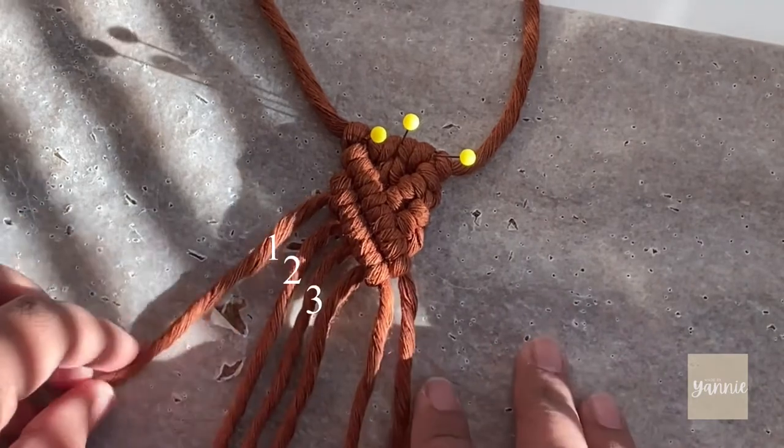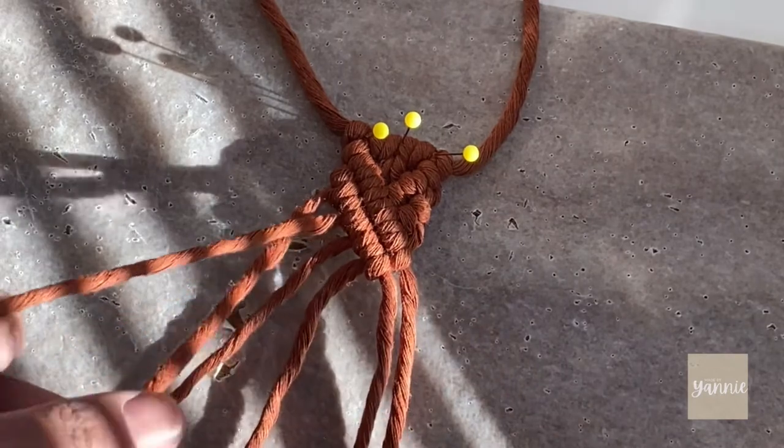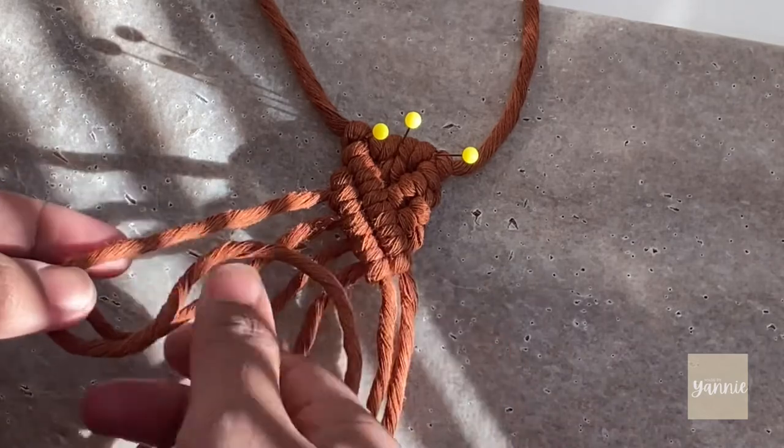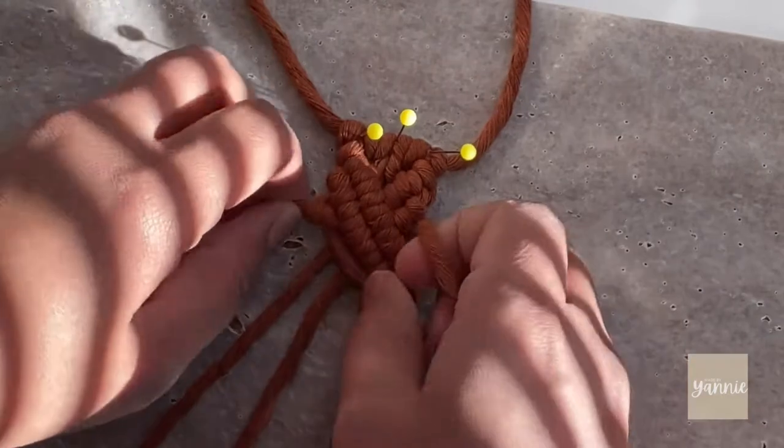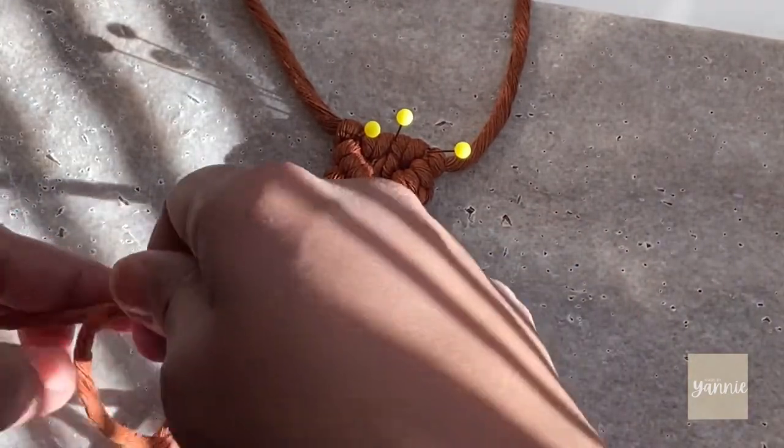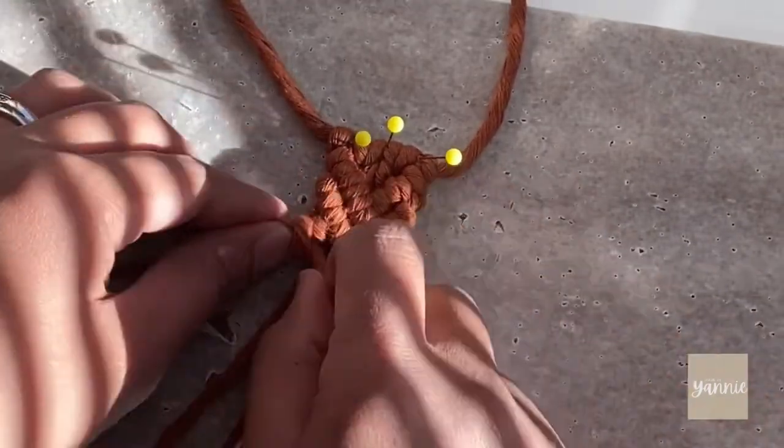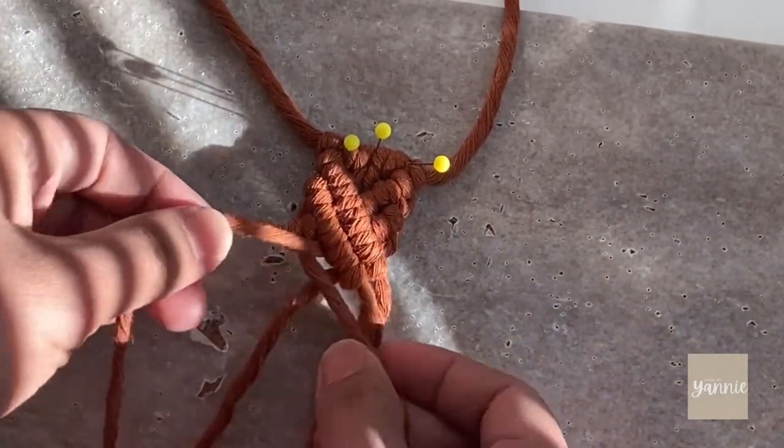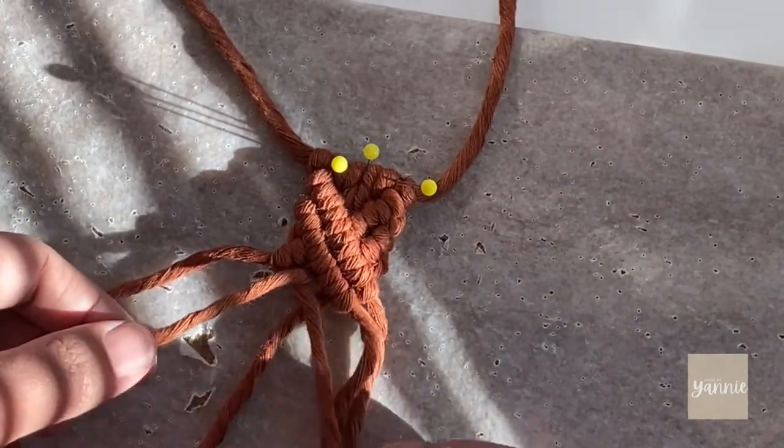Now that we are done on that part, I've numbered the cords that we are going to work on. Two and three are going to be our support cords and one will be the working cord. Bring the working end over and under cord two. Do the same step to complete your double half-hitch knots. Now grab cord three over our working cord and tie one more double half-hitch knots to complete our pattern.